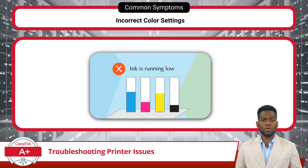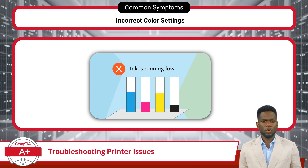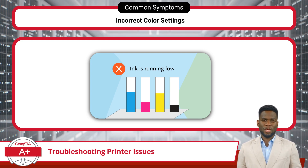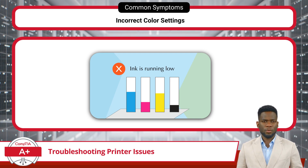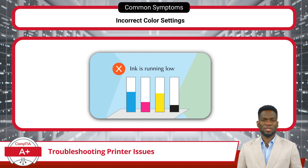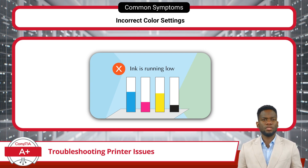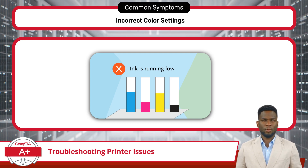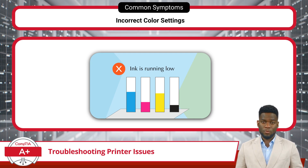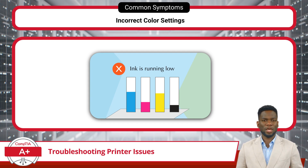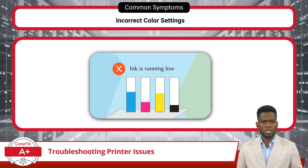Incorrect print colors due to toner or ink cartridge issues can significantly affect print quality. If colors appear distorted, faded, or inconsistent, check the levels of toner or ink in the cartridges, as low levels can lead to inconsistent output. Replace any cartridges that are low or empty. If problems persist, ensure the correct color profile and settings are selected within the document or image, verify that printer settings align with your color settings, and consider calibrating the color settings on your printer for accurate color reproduction.